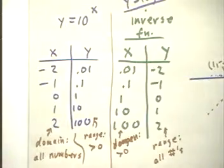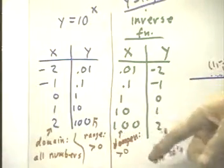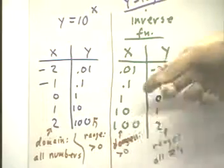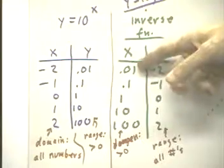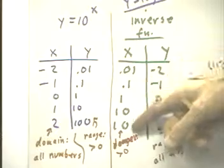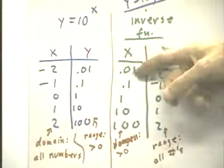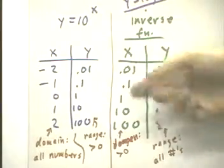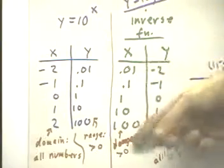For the inverse function, this incomprehensible word here is domain, when we switch columns, of course, this column can consist of all numbers, consists of all numbers, if we drew the whole column, all the numbers greater than 0.